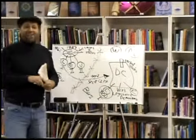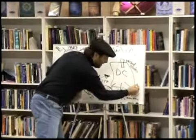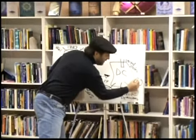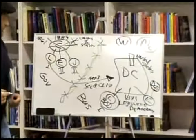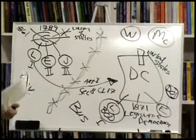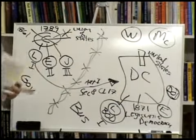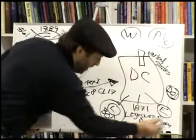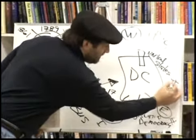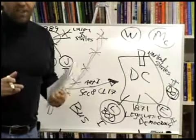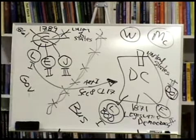Here's the third branch of government — the Department of Justice, the DOJ. It looks like three branches of government, but it comes underneath the executive branch. This legal system comes out from underneath the dictator himself.